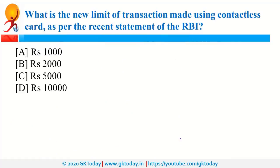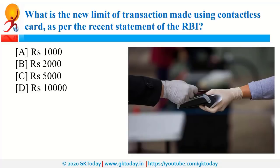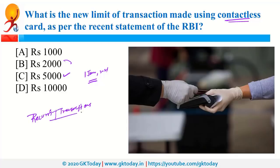What is the new limit of transaction made using a contactless card as per the recent statement of RBI, that is Reserve Bank of India? The new limit is 5000 rupees. The previous limit was 2000, and this is effective from 1st January 2021. RBI also increased the limit for recurring transactions using card and UPI; the new limit is 5000. Recurring transactions are frequent payments such as your electricity bill paid on a regular basis.